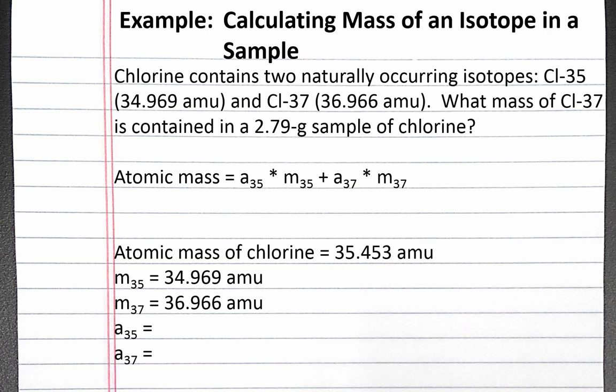Right now we have one equation and two unknowns, so there must be one more equation that relates the abundances of the two isotopes. If we add up the fractional abundances of all the naturally occurring isotopes of chlorine, we get 1, which is the fraction for 100%. Since we want to know the abundance of chlorine-37, we should solve this equation for the abundance of chlorine-35. The abundance of chlorine-35 equals 1 minus the abundance of chlorine-37.